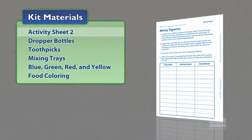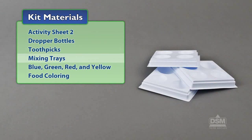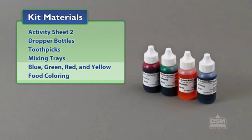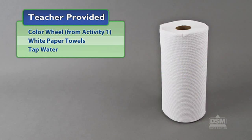Activity Sheet 2, dropper bottles, toothpicks, mixing trays, and blue, green, red, and yellow food coloring. You will also need to provide color wheel from Activity 1, white paper towels, and tap water.